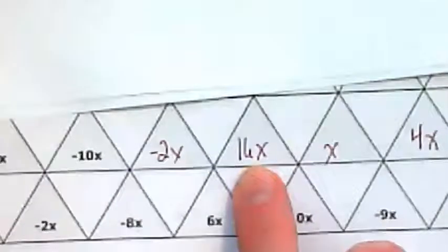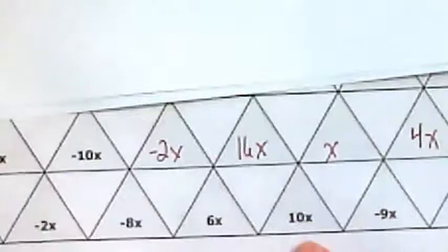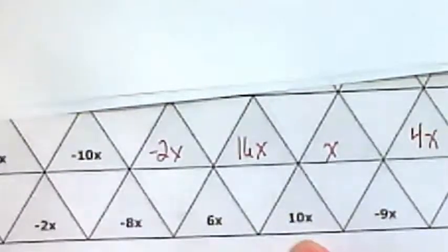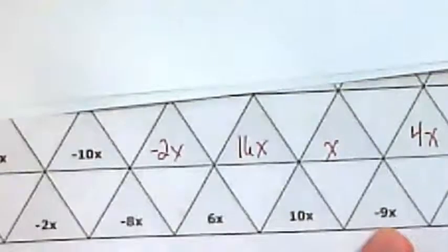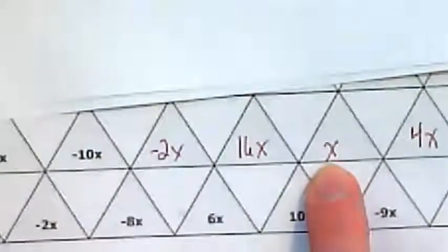Where did I get the 16x from? I took 6x and 10x. The x is there because 10x minus 9x. 10x minus 9 is 1. That leaves us with a single x. So I hope you have a little bit of fun with that puzzle.